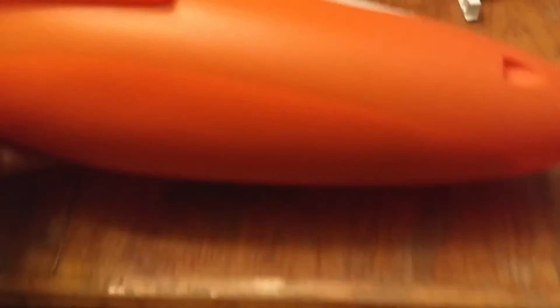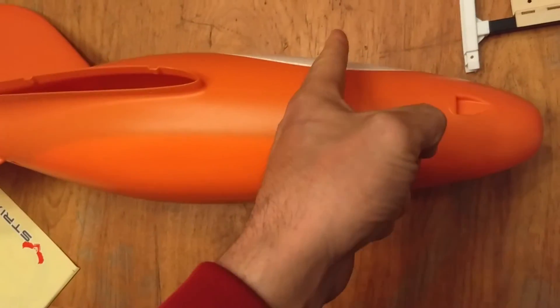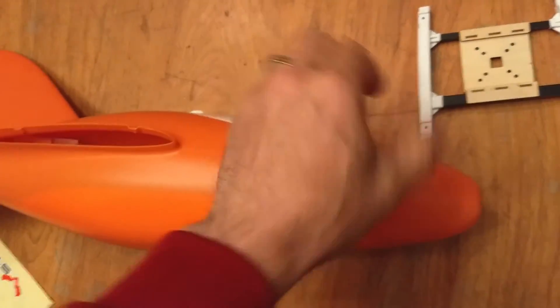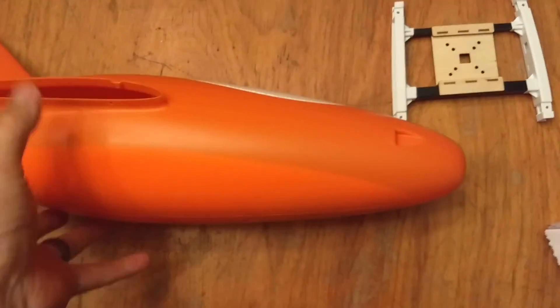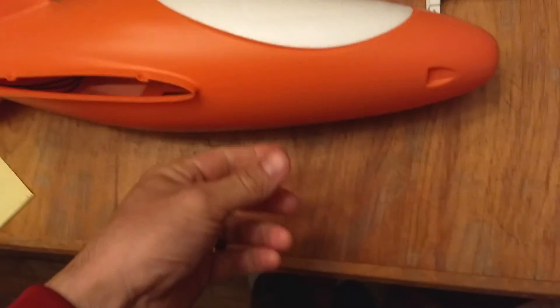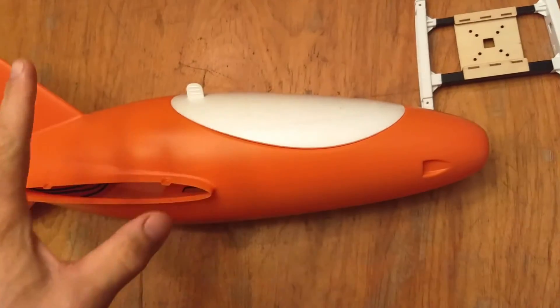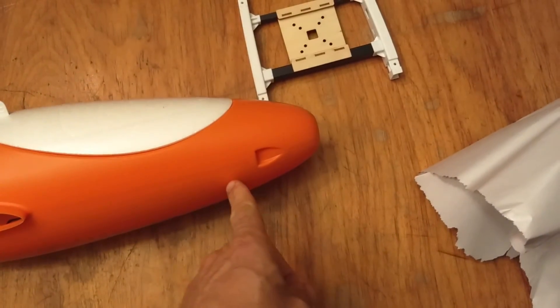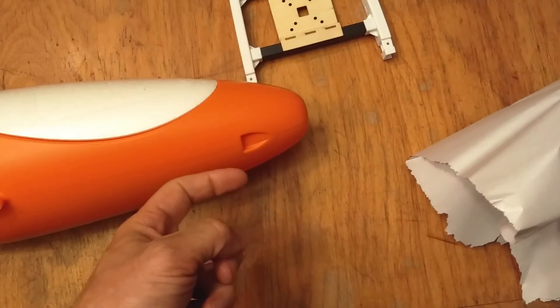I've also smashed the nose in on mine really good and it was all creased like right about the center of the screen here. It was bent like the nose was pushed up like that and I hit it with a hot air gun and I just kind of pushed it all back together and it looks totally mint. Like you can't even tell.